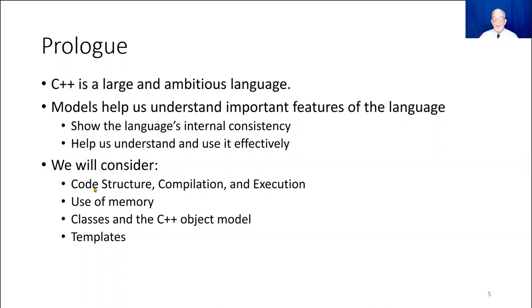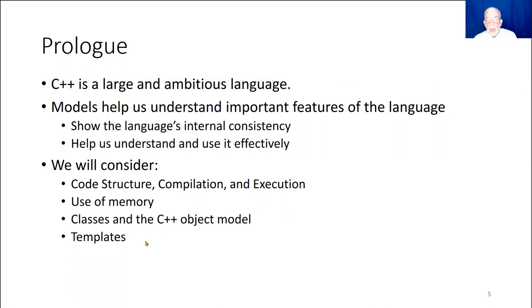These models cover code structure, compilation, execution, use of memory, classes in the C++ object model — that one particularly will be a big help getting your mindset where it needs to be — and templates. What we're after is to help you develop this internal mental model of what the compiler is going to do. You write a line of code, what's going to happen? It's that mindset that we're trying to help you acquire.